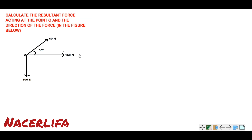In today's tutorial video, we shall be looking at this problem on resultant of a vector — in this case, resultant force. The resultant force can be described as the total amount of force acting on an object or body along with the direction of the body. We want to find the effective force acting at this point. We have one force at an angle of 30 degrees, 150 Newton, and 100 Newton, all acting at this point. We want to find the resultant force.